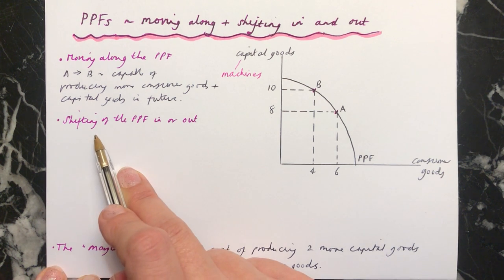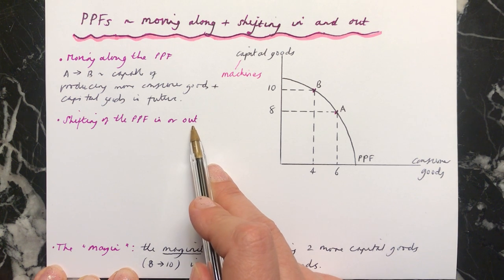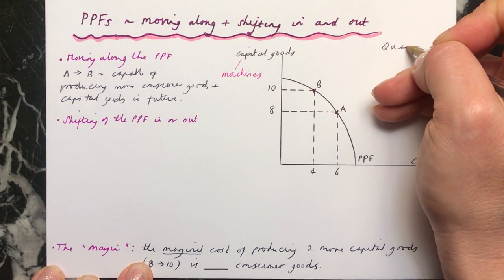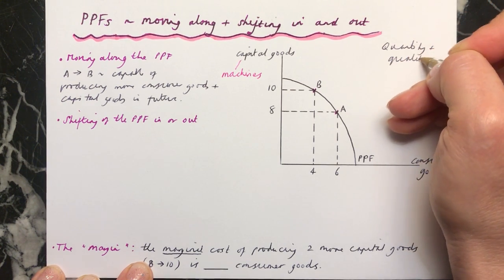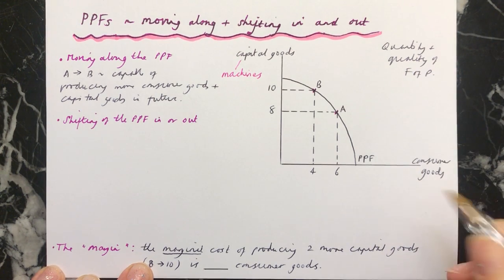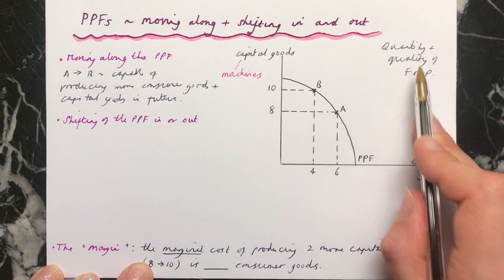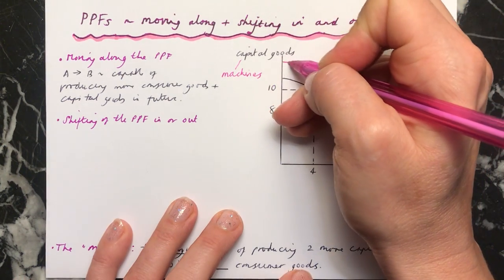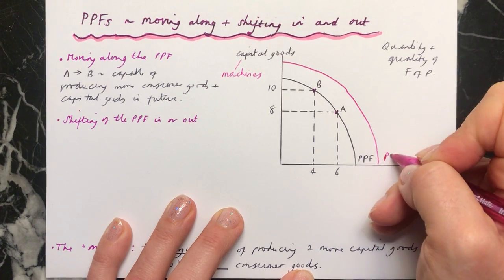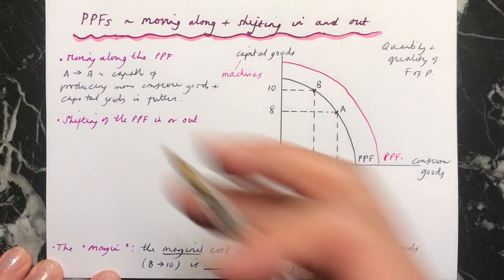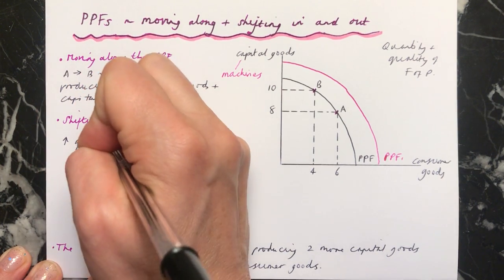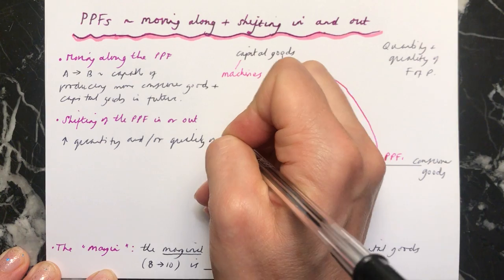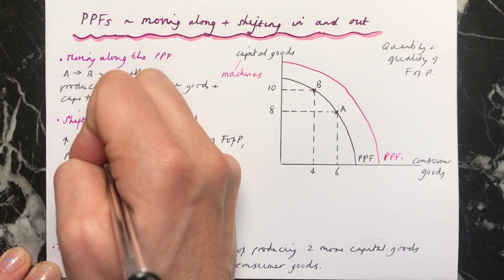So if we look at the shifting of the PPF inwards or outwards: where the PPF lies is determined by the quantity and the quality of the factors of production. Therefore, if your quantity or quality of the factors of production increases, this curve will shift outwards — for example, to here, and we'll label this PPF1. So if we have an increase in the quantity and/or the quality of the factors of production, the PPF shifts outwards.